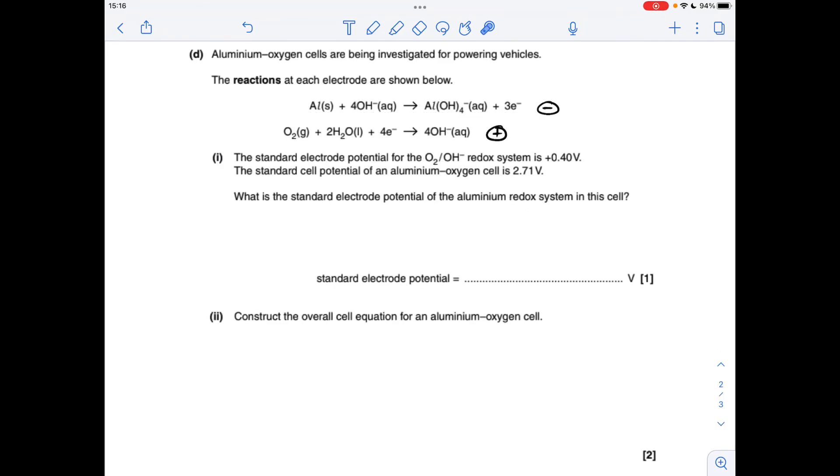So moving on to part D, we've got the reactions for the aluminum oxygen cell. You'll notice I've written plus and minus there. The most positive electrode or the most positive electrode potential is the one that gains the electrons. We can see the way this equation has been written, the oxygen-water combination is gaining electrons. So this is our positive electrode. Obviously, this is the negative electrode. And if we remember that to calculate the cell potential or E cell, it's the most positive electrode potential minus the least positive.